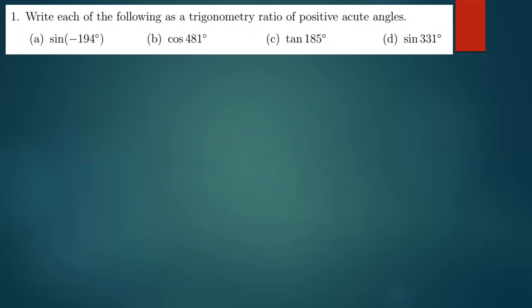The first question from the tutorial sheet is asking us to write the following trigonometrical ratios as a trigonometric ratio of positive acute angles. So this is simple and straightforward. Let's quickly begin to do it.